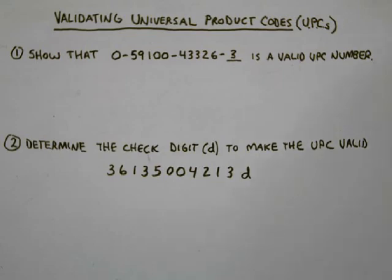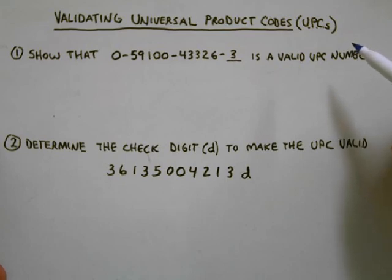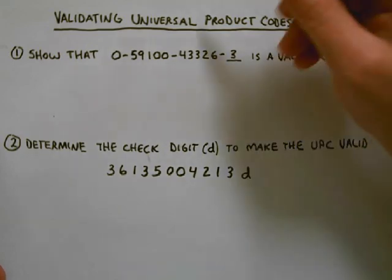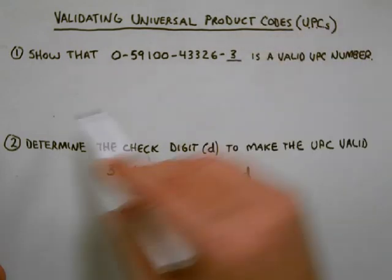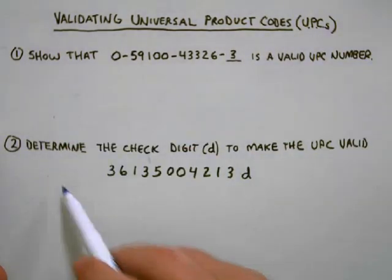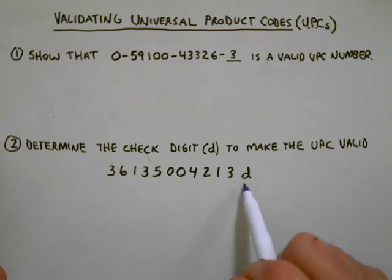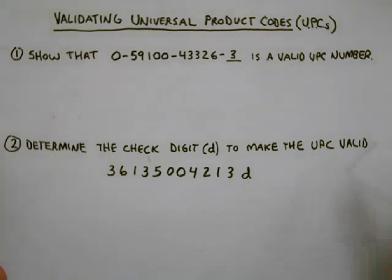Let's review how to validate UPC codes. Remember there were two types of questions with UPC codes: one where you had to show that the number was valid, and the other to determine a check digit number to make it valid. So let's take a look at the first one.